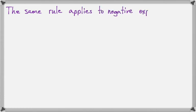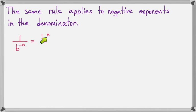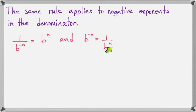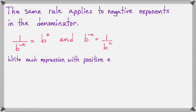Now the same rule applies to a negative exponent that's in the denominator. We can make that negative exponent positive by moving it to the top. And just as a reminder, we can make a negative exponent positive if it's in the top by moving it to the bottom. So it turns out that simply moving something from the top to the bottom, or from the bottom to the top, changes its sign. So now let's write each expression with a positive exponent and then simplify.